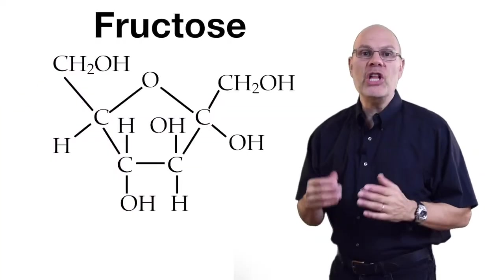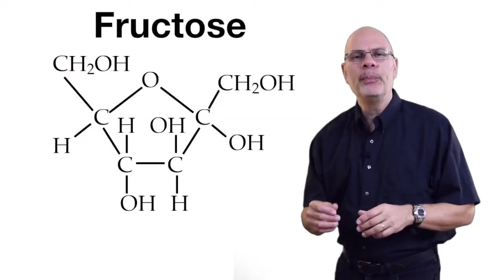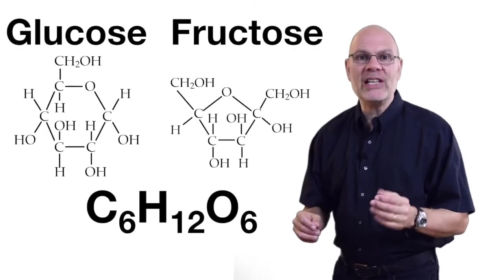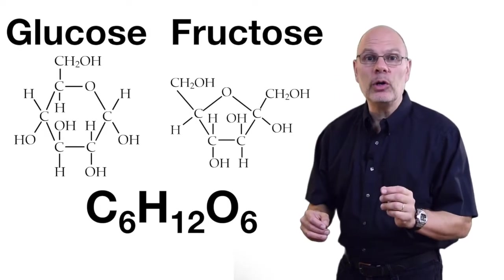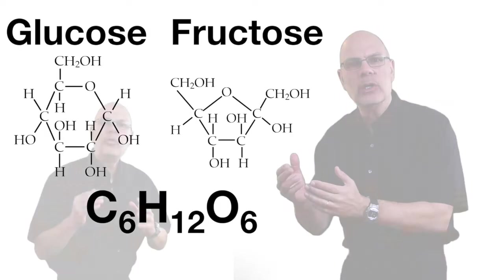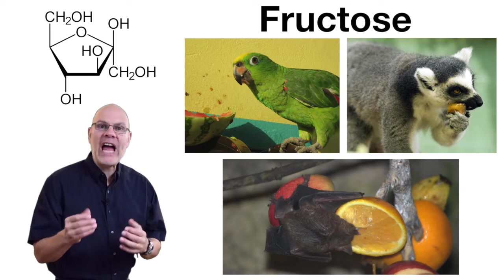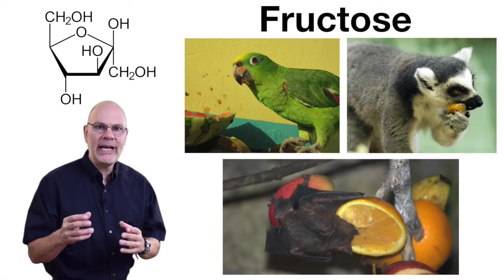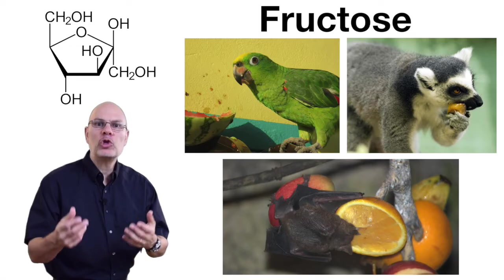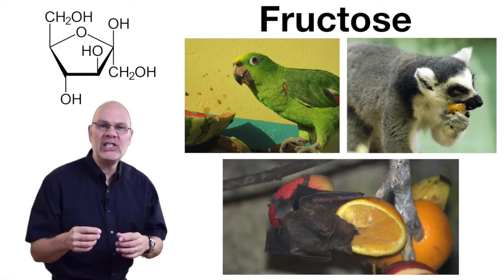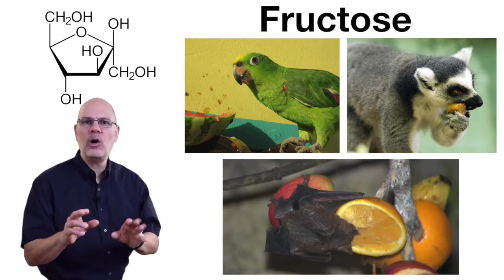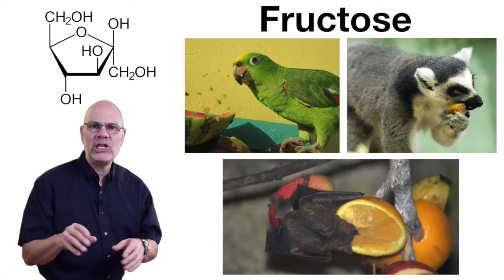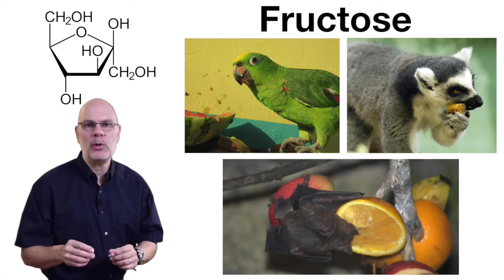Fructose is another monosaccharide that you should know. It's a structural isomer of glucose, which means it has the same empirical formula but a different structure. Fructose is naturally found in fruit, where it attracts fruit-eating animals, which eat the fruit, swallow the seeds, and then defecate those seeds far away from the parent plant.